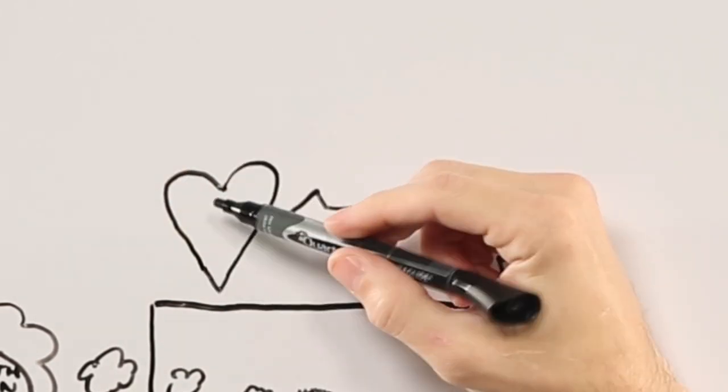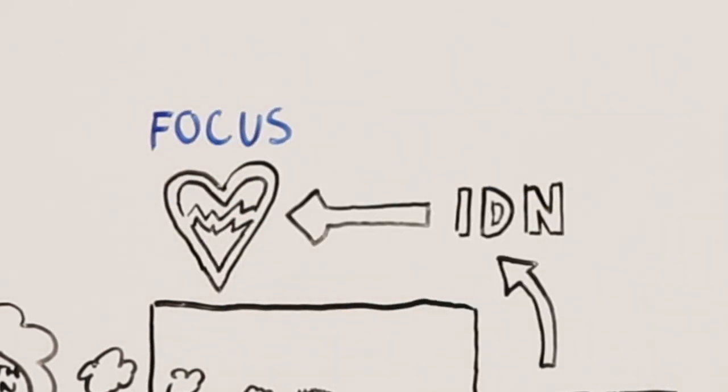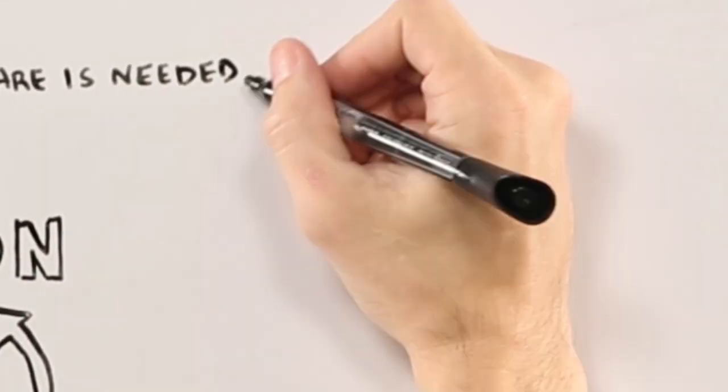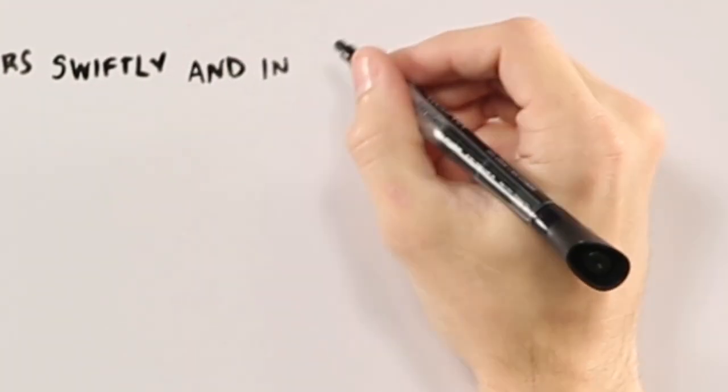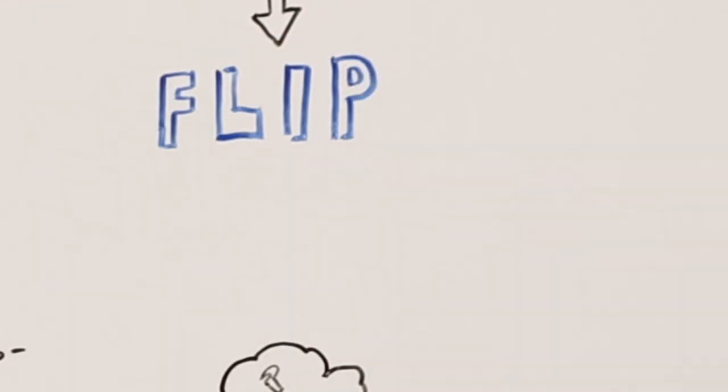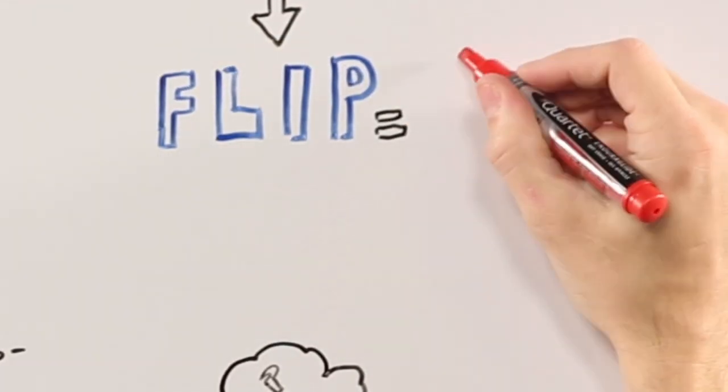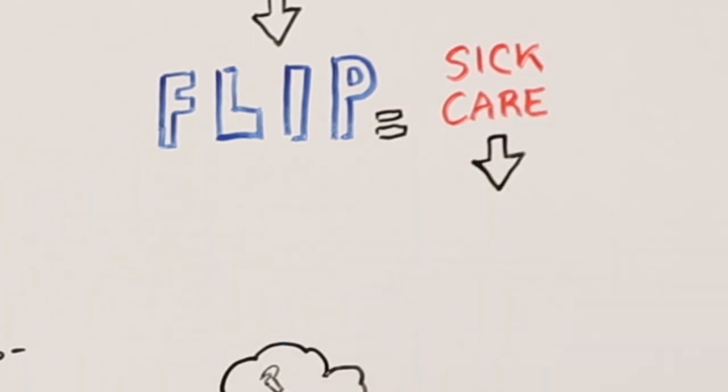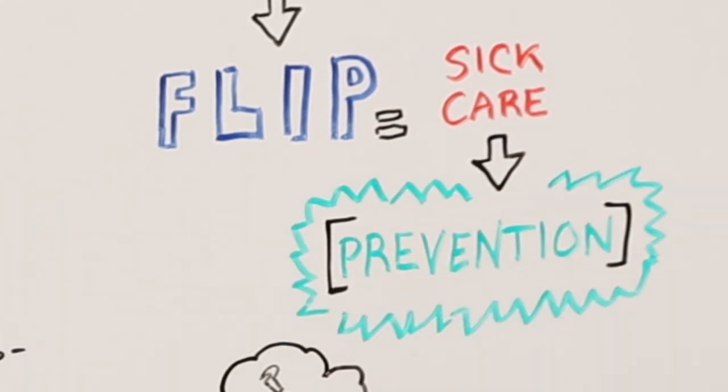The health plan will work with the IDN to ensure that care begins to focus on prevention and wellness, and when care is needed that it occurs swiftly and in exactly the right clinical setting. By doing so, we can work to flip the basic economic model of health care from sick care to what it should be: prevention, wellness, and focused services precisely when needed.